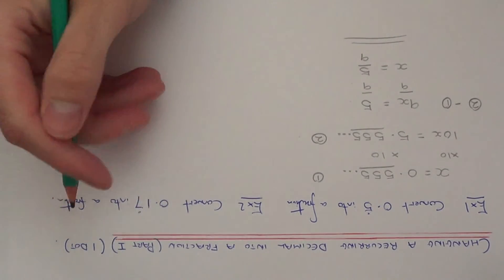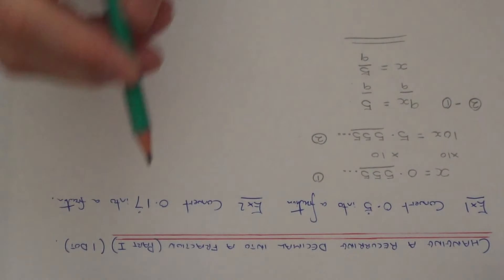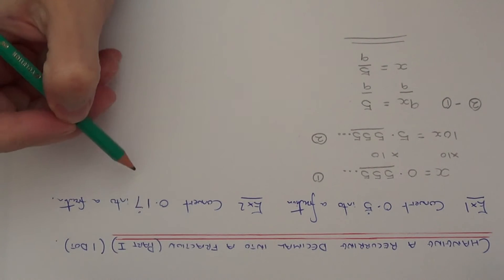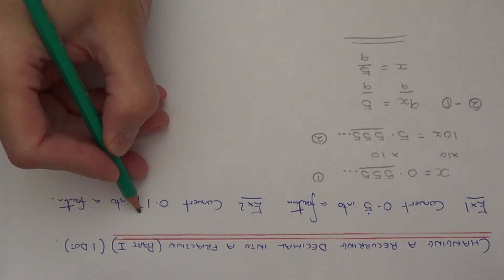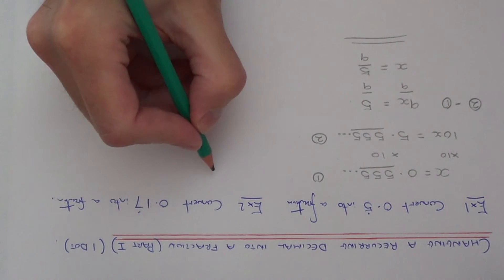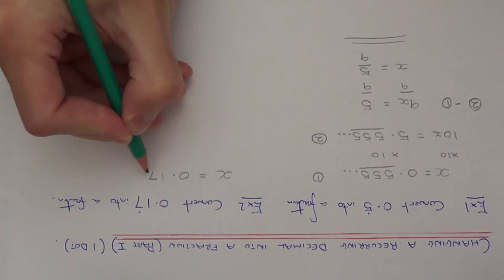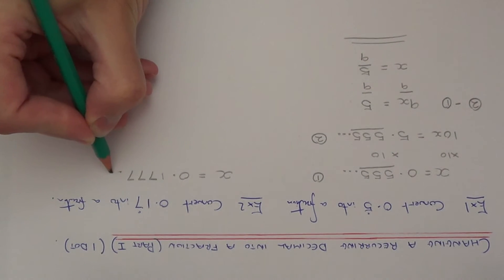So let's move on to example 2 then. This one's a little bit harder to do. I've got to convert 0.17 with a dot on the 7 into a fraction. This dot on the 7 means that the 7 is repeating at the end. So the first thing I want to do is let x equal my recurring decimal. So this means the 7 is repeating.